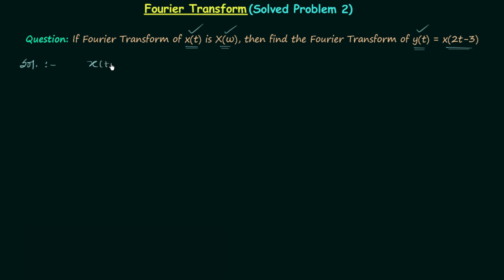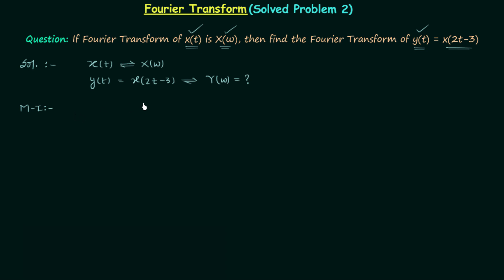The time domain signal x(t) has Fourier transform X(ω), and the time domain signal y(t) = x(2t - 3) has Fourier transform Y(ω), which we are required to calculate. In Method 1, we will first perform the time shifting operation and then the time scaling operation, since y(t) is obtained after both operations on x(t). With every operation performed on x(t), X(ω) will change accordingly, using the properties explained in previous lectures.